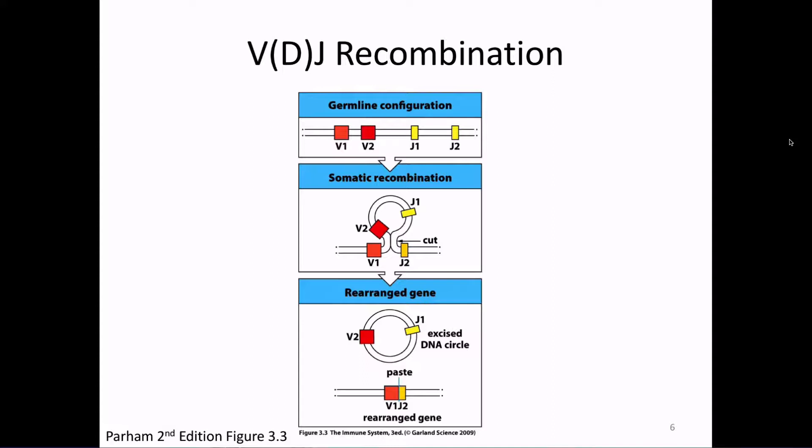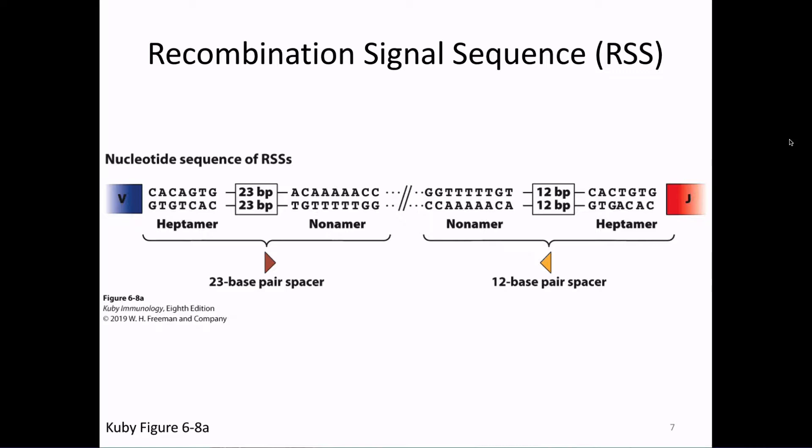This marking is due to unique DNA sequences called the recombination signal sequence, or RSS. The DNA in these regions is called the RSS. There is a V segment right here, and right next to the V segment there is this area of sequence known as the RSS. Here is a J segment, and right next to the J segment is also an RSS.